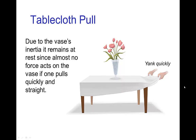The classic example of the Law of Inertia for an object at rest remaining at rest is the tablecloth pull. In this case, we have a vase of flowers, and if a tablecloth is pulled out from underneath the vase quickly, then there's only a very small force acting on the vase, and the inertia of the vase keeps it in place.